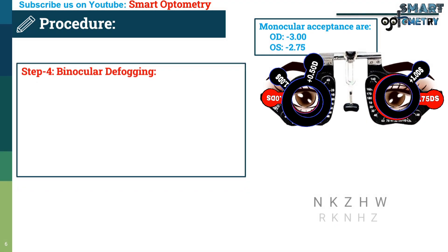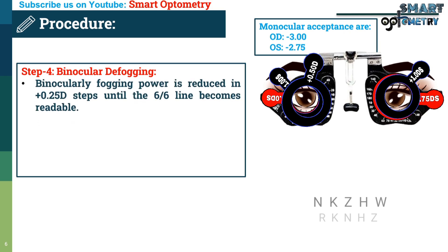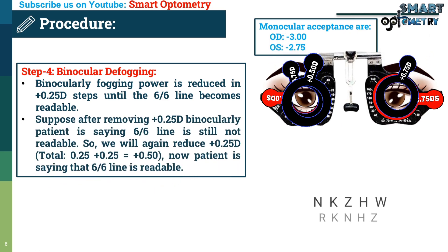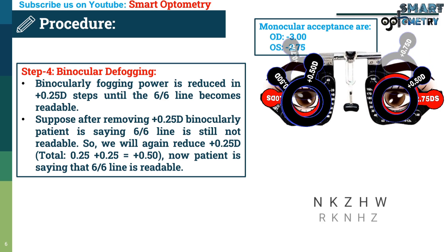Step four — binocular defogging: binocularly, the fogging power is reduced in plus 0.25 diopter steps until the 6/6 line becomes readable. For example, after removing plus 0.25 diopters binocularly, if the patient says the 6/6 line is still not readable, reduce by another plus 0.25 diopters. When the patient says the 6/6 line is readable, stop.